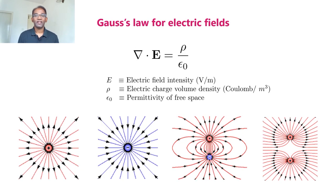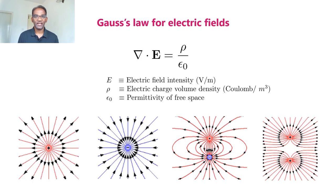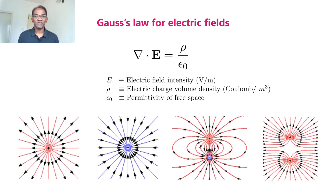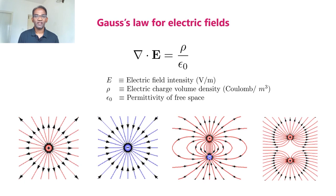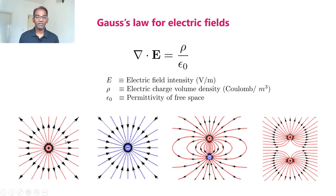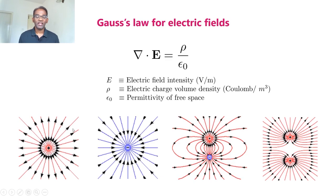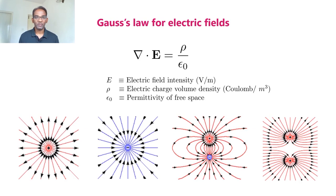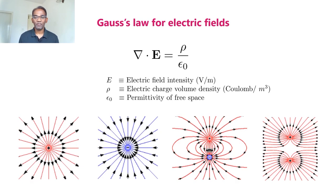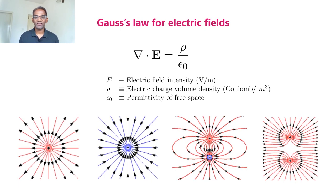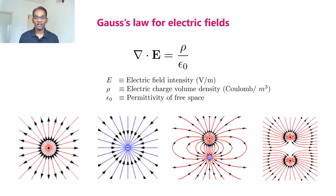This equation says that if we have an electric charge distribution in space, depending upon the nature of the charges, the electric field will be diverging or converging from the charge distribution. If the charge distribution is that of positive charges, the field lines will be diverging from the charge distribution as we see in the first figure. If the charge distribution is negative, then electric field lines will be converging towards the negative charge. And if we have a dipole — a positive and a negative charge in space — then electric field lines will start from the positive charge and end at the negative charge.